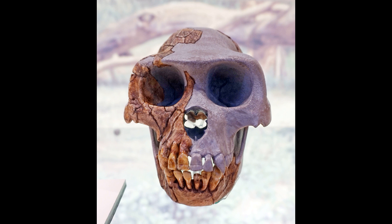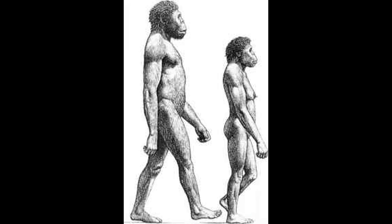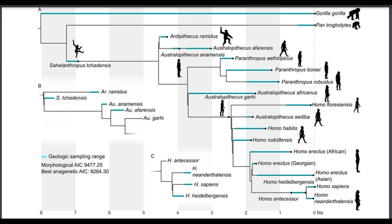Fascinatingly, Ardipithecus ramidus appears to have been sexually monomorphic — males and females had the same body size and canine tooth size. This is interesting as members of genus Homo similarly have reduced sexual dimorphism compared to the Australopiths and Paranthropines, where males are much larger than females. Tim White and colleagues used this monomorphism to propose that Ardipithecus ramidus is on the human lineage rather than being a cousin, though this raises the question of what caused the Australopith spike in sexual dimorphism. Ardi firmly rests in the hominin family tree given her species' bipedal adaptations and reduction in canine teeth compared to earlier Miocene apes.